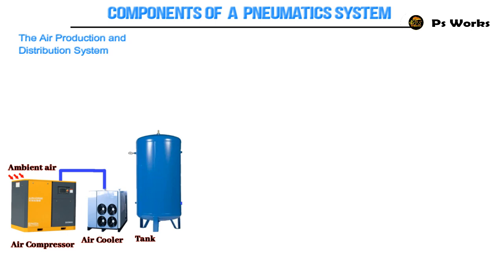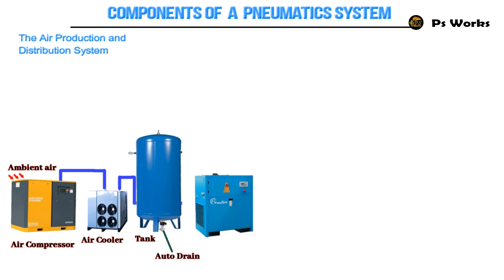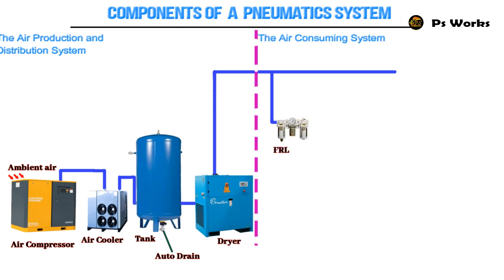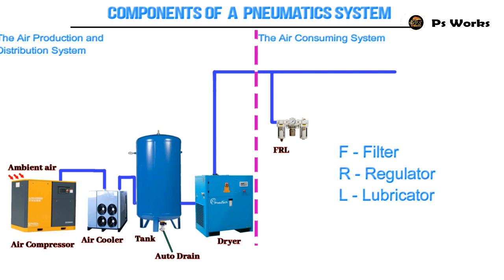Tank: the compressed air coming from the compressor is stored in the air receiver. Auto drain: drains all the water condensing in the tank without supervision. Dryer: the water vapor or moisture in the air is separated from the air by using a dryer. FRL: an FRL unit comprises a filter (F), regulator (R), and lubricator (L). These individual units can combine into one unit to ensure clean air in a pneumatic system, or each component can be used individually. A proper FRL unit provides higher reliability of downstream components, reduced power wastage from overpressurization, and increased component lifetime.